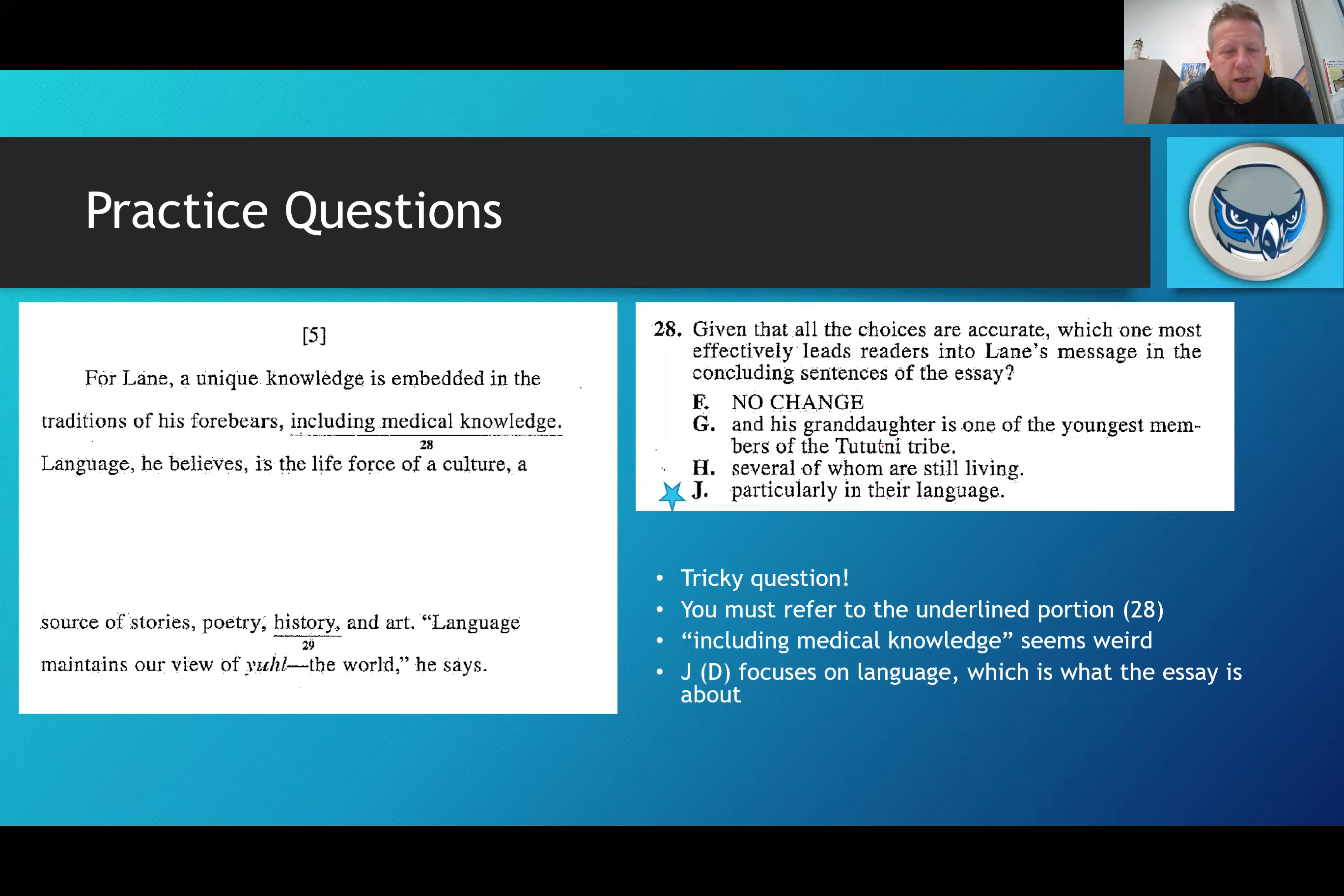All right, the correct answer is J, particularly in their language. Now here's the question. Given that all the choices are accurate, and that's important, we're not looking for any wrong answers in terms of accuracy. We're looking for wrong answers in terms of placement. Which one most effectively leads the reader into Lane's message in the concluding sentence of the essay?